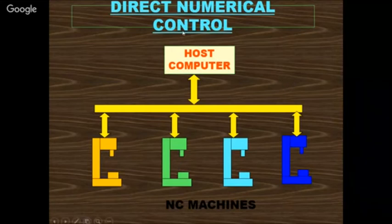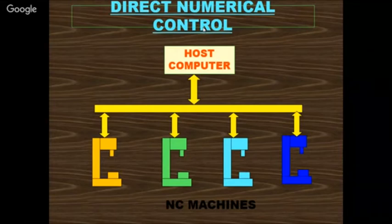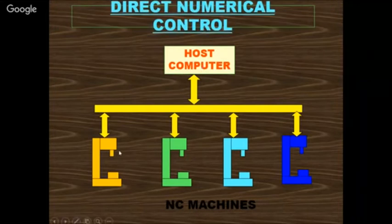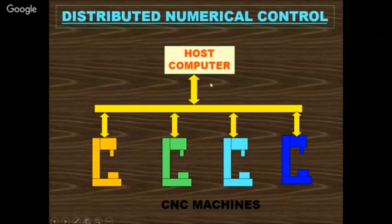DNC (Direct Numerical Control, also called Distributed Numerical Control) transfers data from the host computer to a number of various machines simultaneously. From the host computer, the same data is transferred to n number of machines. In the earlier case, data was transferred to NC machines; now in distributed numerical control, data is transferred to various CNC machines. This saves time.